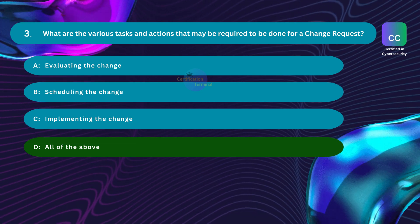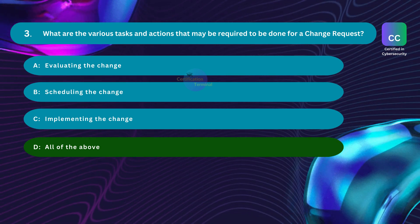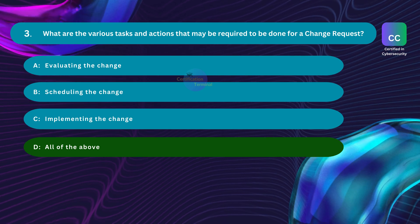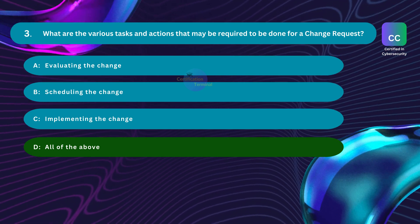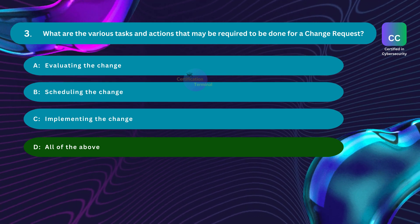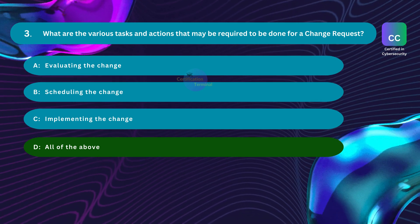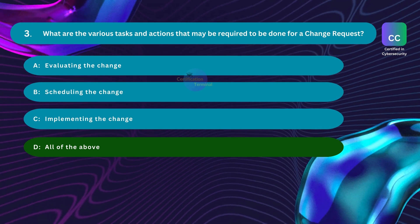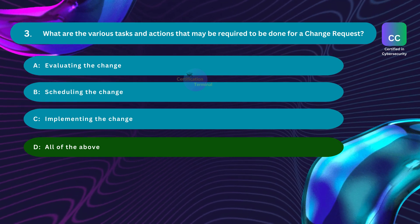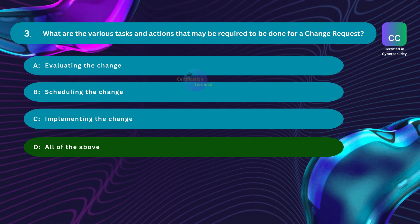Understanding why a change did not achieve its intended outcomes is vital for informed decisions during rollback. Proper documentation is essential for tracking changes, understanding their impact, and facilitating effective communication. Ensuring rollback procedures are well-defined and executable is crucial to minimize risks. This involves planning when the rollback will take place at a time that minimizes disruption, and thoroughly testing the change to identify potential issues before implementing a rollback.